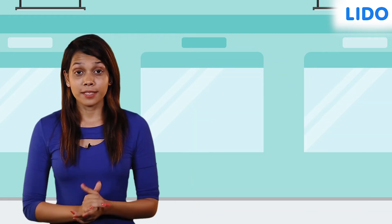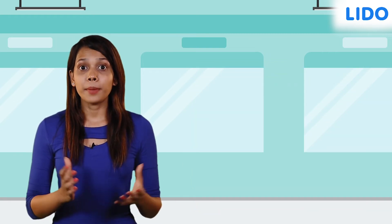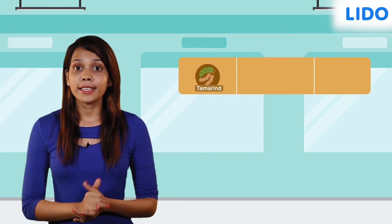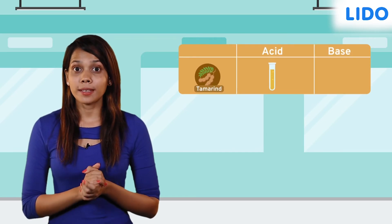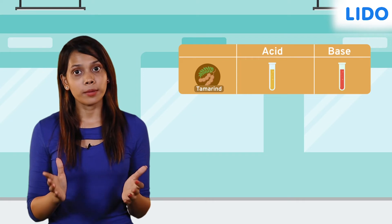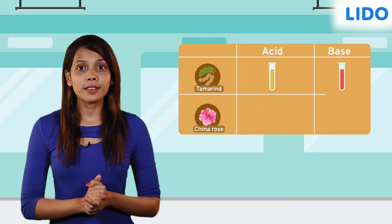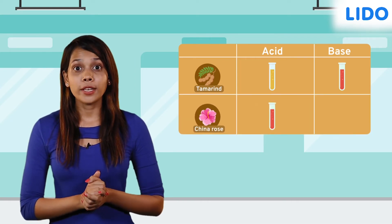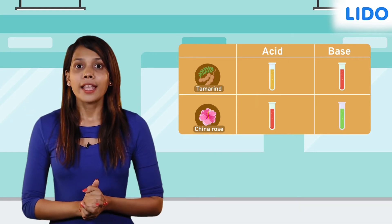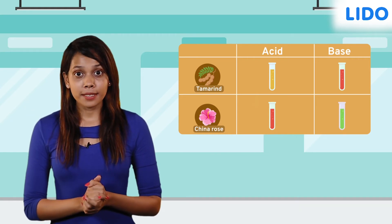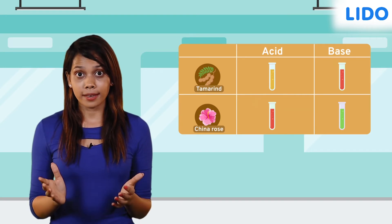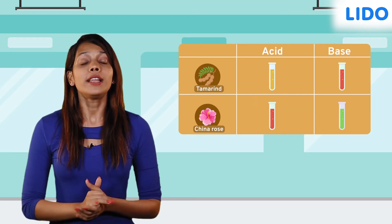Some substances change their color when in a basic medium. For example, turmeric stays yellow in acidic and neutral substances, but turns red when in contact with a base. China rose turns red when used on acids and green when used on bases. Since these substances indicate the nature of the liquid — acidic or basic — they are called indicators.